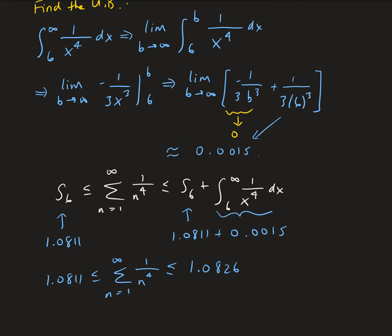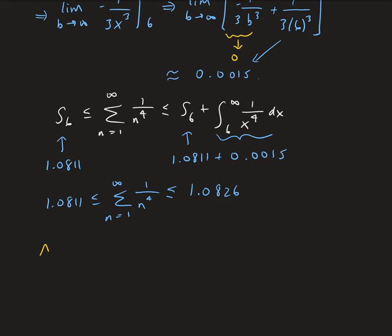So this is a way we can approximate our series. The idea is that the more terms we have — as the number of terms approaches infinity — we'll get a better and better estimate, and our bounds will get tighter and tighter.